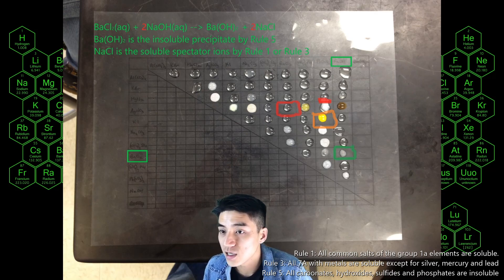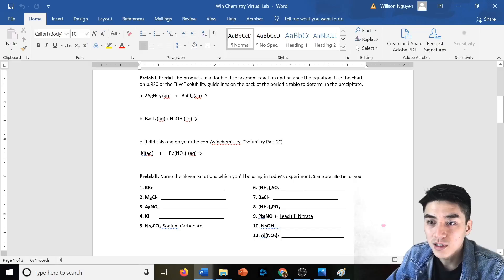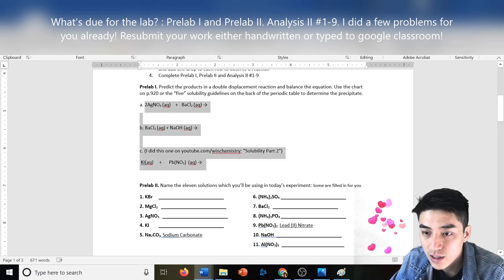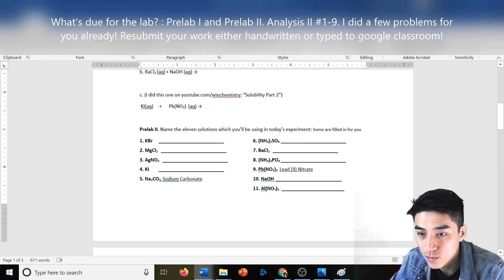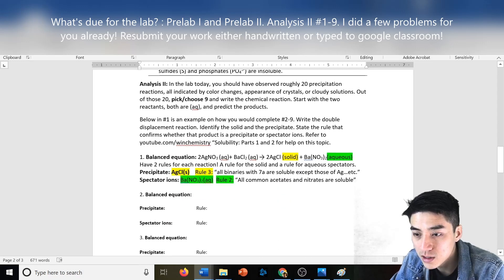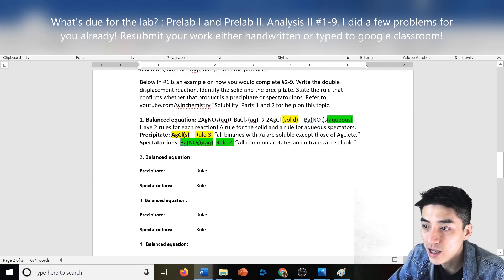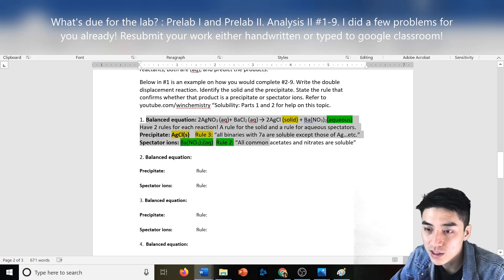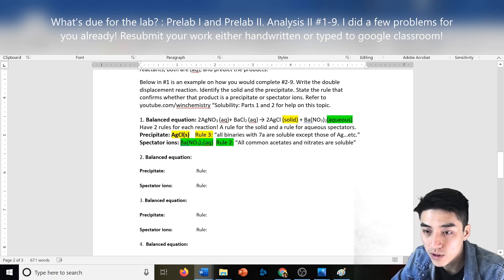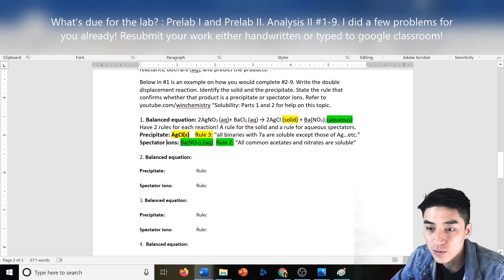Let's see what we have to turn in for this lab. So pre-lab one, which is writing out double displacement reactions. Pre-lab two, I gave you four of these names—some of these are also filled in for you. And analysis two—so of the 20 reactions that had some sort of color change or turned opaque or cloudy, pick nine of them and then do it just like this. So there's a balance equation that you have to write out and then state two rules for your precipitate and then which one is the spectator ions. So I did a couple examples previous to this.